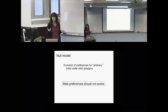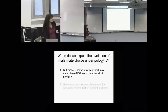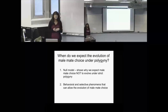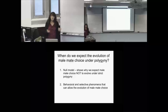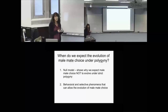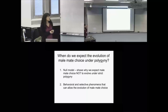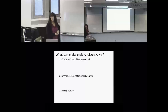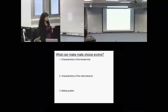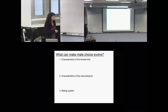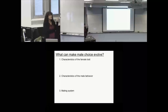This null model shows that when looking at evolution of preferences for arbitrary traits under strict polygyny, male preferences should not evolve. But we do see male preferences in nature sometimes. For the rest of the talk, I'll go through a list of behavioral and selective phenomena that could potentially reverse this direct selection from the null model. I'll group these into three categories: characteristics of the female trait, characteristics of the male behavior, and characteristics of the mating system.